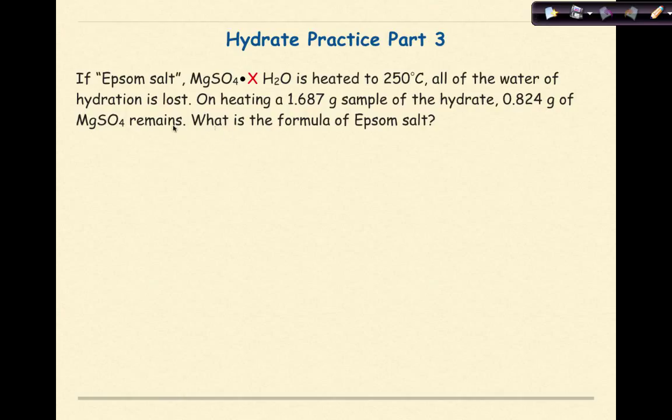Alright, so a number of pieces of information have been given to us, the first one being this one right here, 1.687 gram sample of the hydrate. This is the sample that contains the water. The number 0.824 grams of MgSO4 remains is just the mass of the anhydrate. Let's write those numbers down. So we have the hydrate sample, and that is 1.687 grams, and we have the anhydrate sample, and that is 0.824 grams.